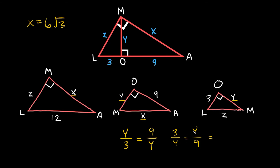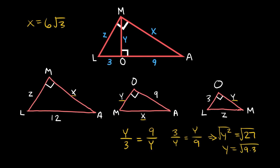Cross-multiplying the Y's together gives Y squared equals 3 times 9, which is 27. Taking the square root of both sides, Y equals the square root of 27. We break that down as the square root of 9 times 3, which is the square root of 9 times the square root of 3. The square root of 9 is 3, so Y equals 3 times the square root of 3.